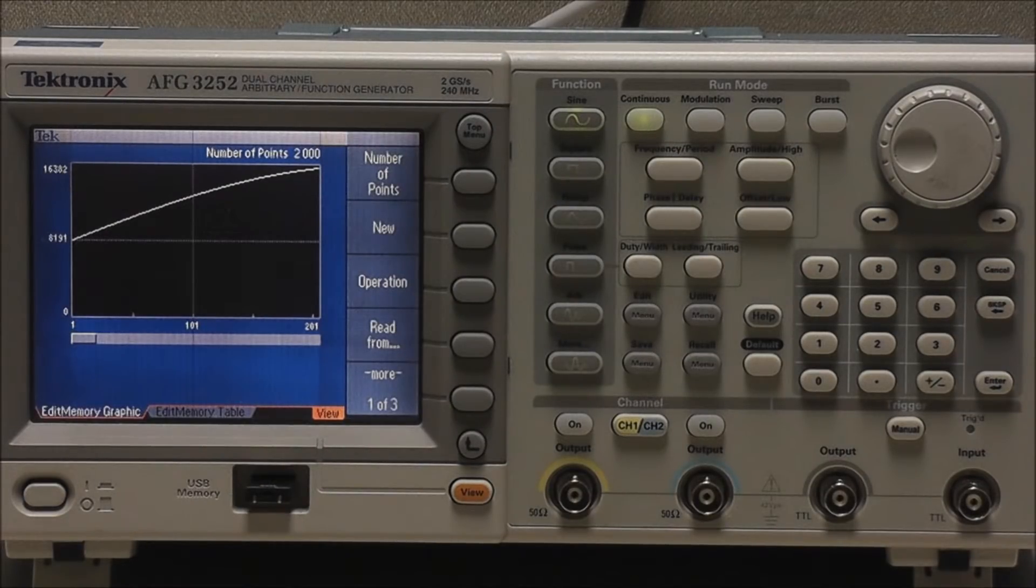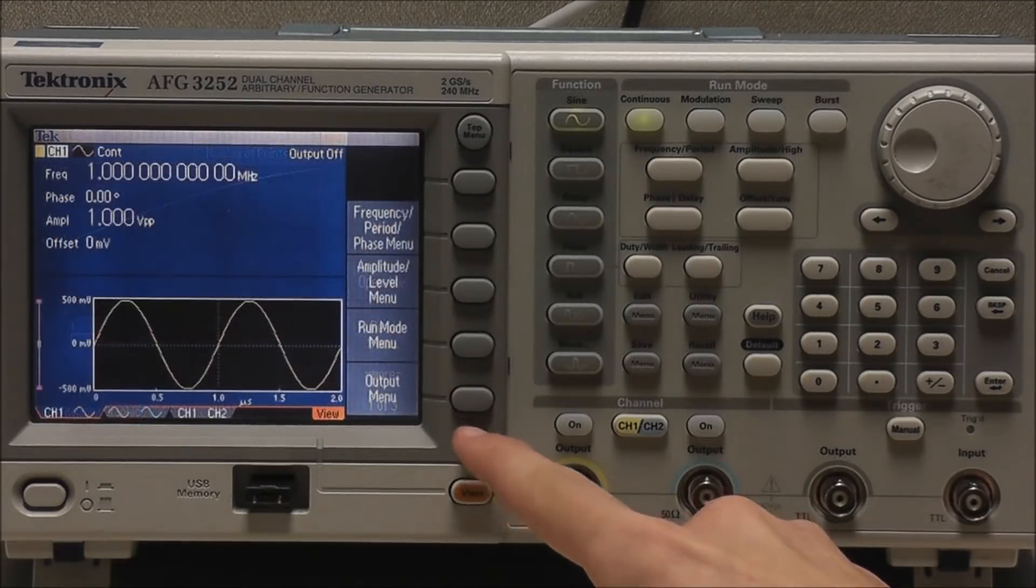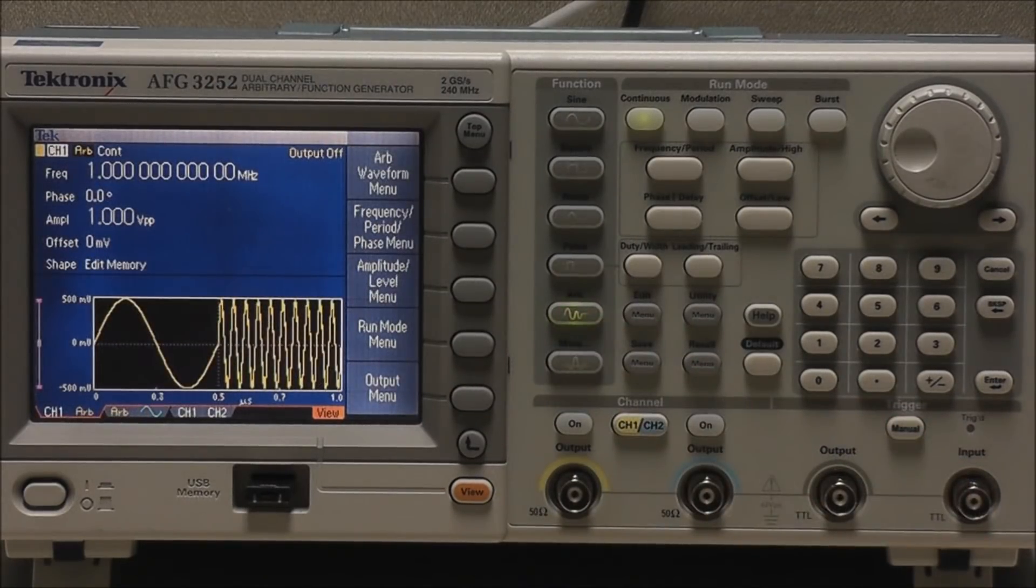Now let's talk about how to output our waveform through a channel. We'll just go to the main menu and select ARB, and it will output our Edit Memory waveform by default.